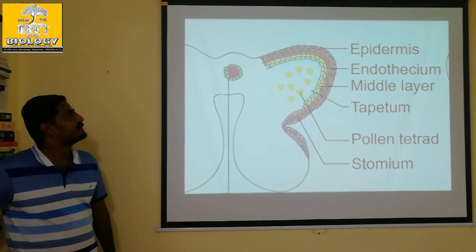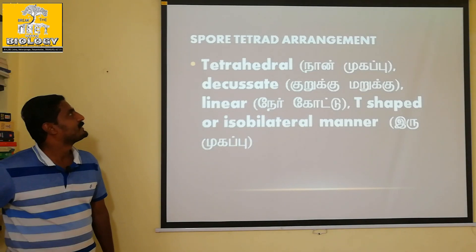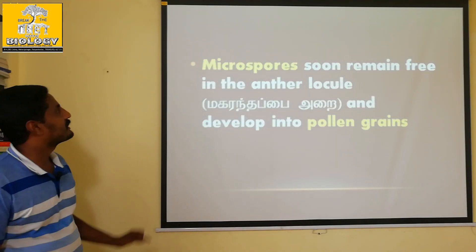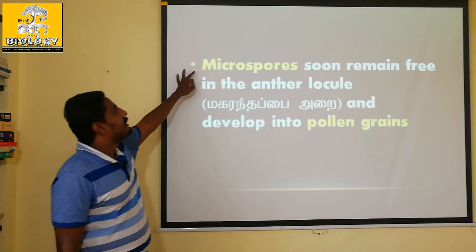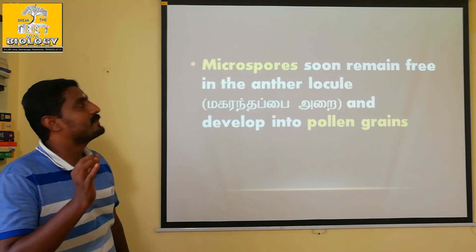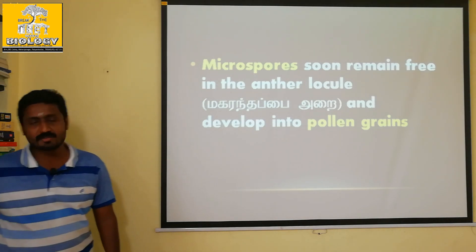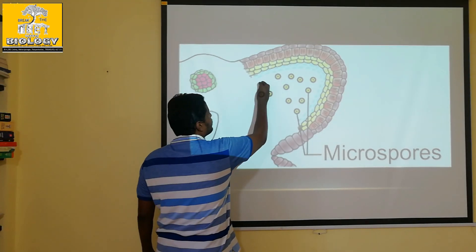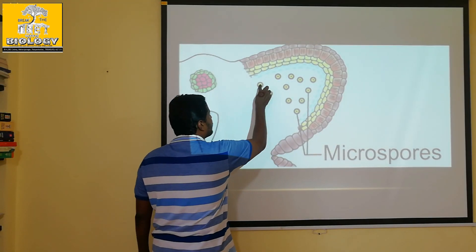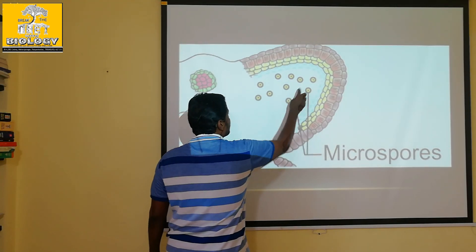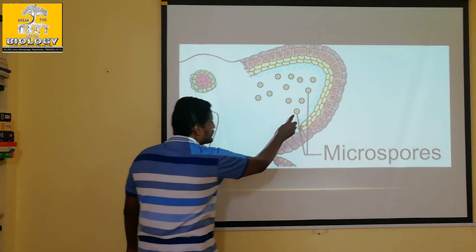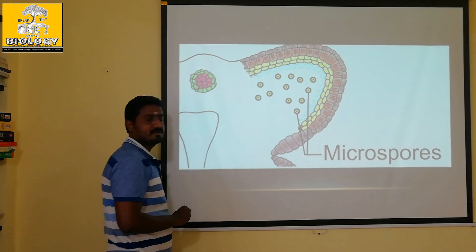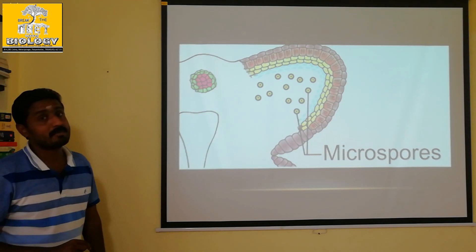The third step: micro spores will soon remain free. Each microspore is a haploid. Each microspore will be a haploid.